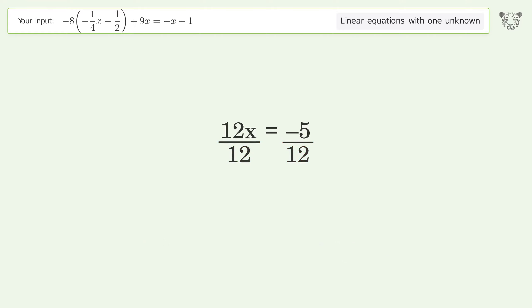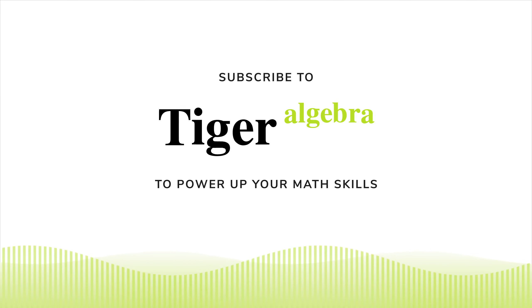And so the final result is x equals negative 5 over 12. Yeah, so that's it everybody.